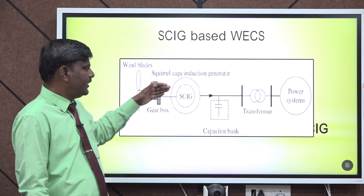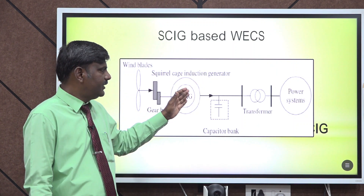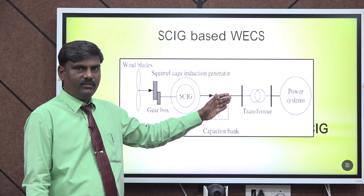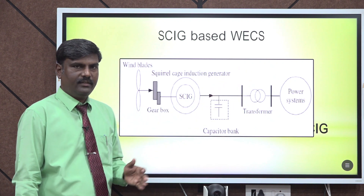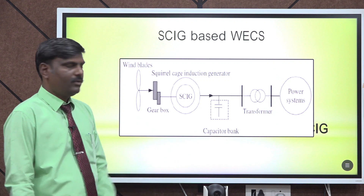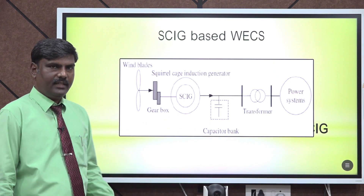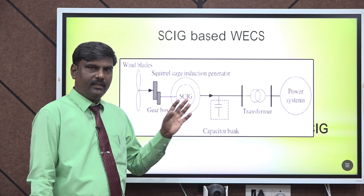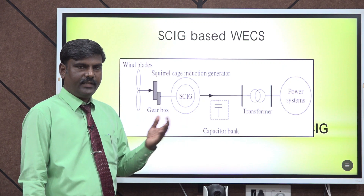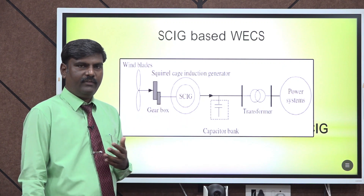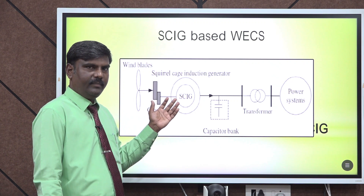From the squirrel cage induction generator, the electrical terminals are connected to a transformer, and from the transformer it is fed to the power system, that is the grid. For this squirrel cage induction generator, we need a capacitor bank because the squirrel cage induction motor operates at a lagging power factor, so a reactive current requirement will be there.